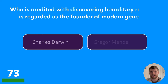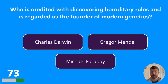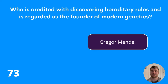We're moving on to question seventy-three: who is credited with discovering hereditary rules and is regarded as the founder of modern genetics? Charles Darwin, Gregor Mendel, or Michael Faraday? The answer is Gregor Mendel.